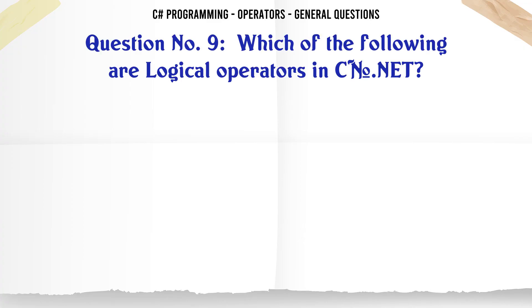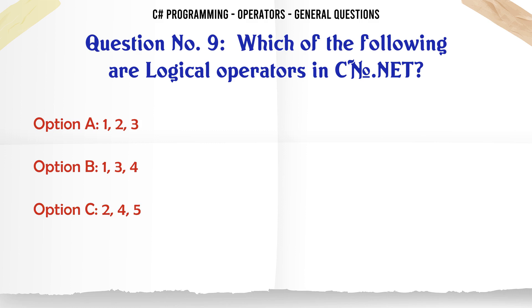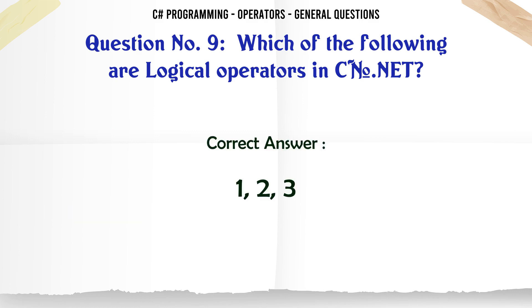Which of the following are logical operators in C.NET? A: 1, 2, 3. B: 1, 3, 4. C: 2, 4, 5. D: 3, 4, 5. The correct answer is 1, 2, 3.